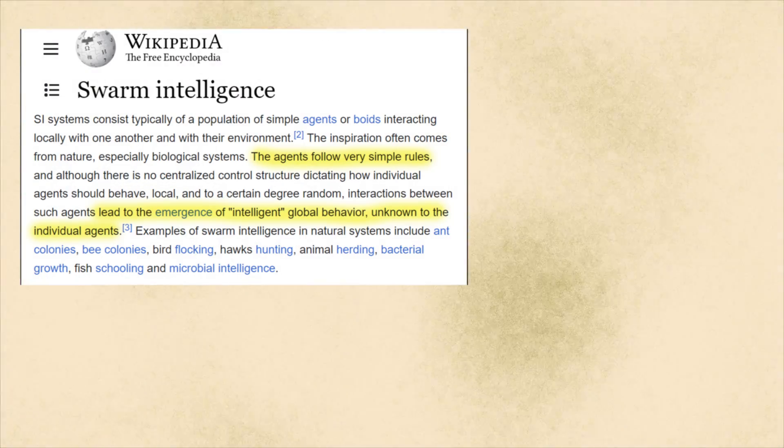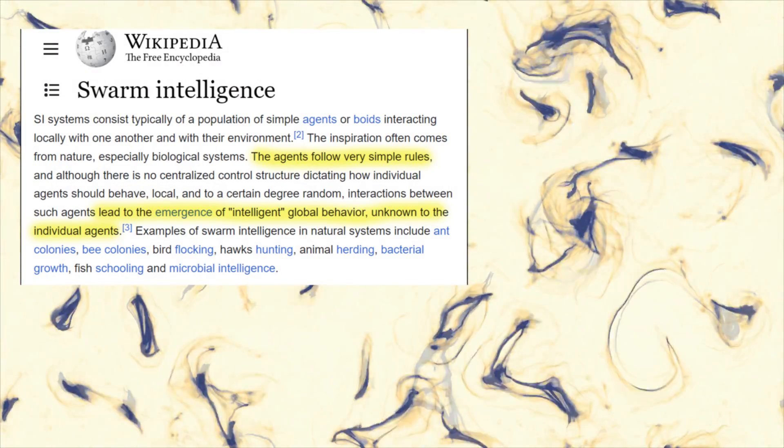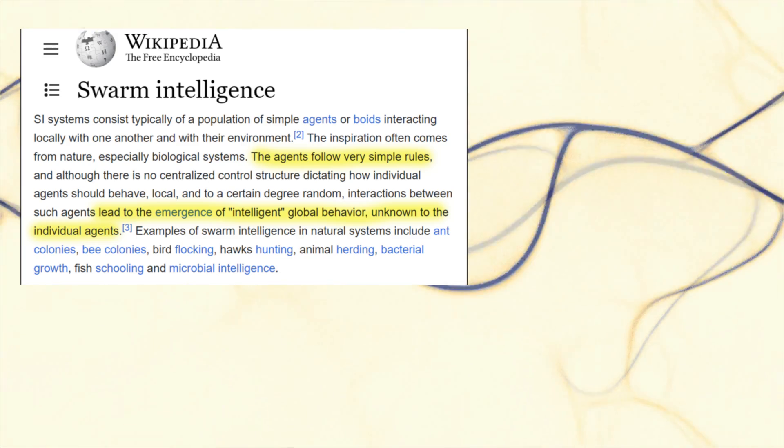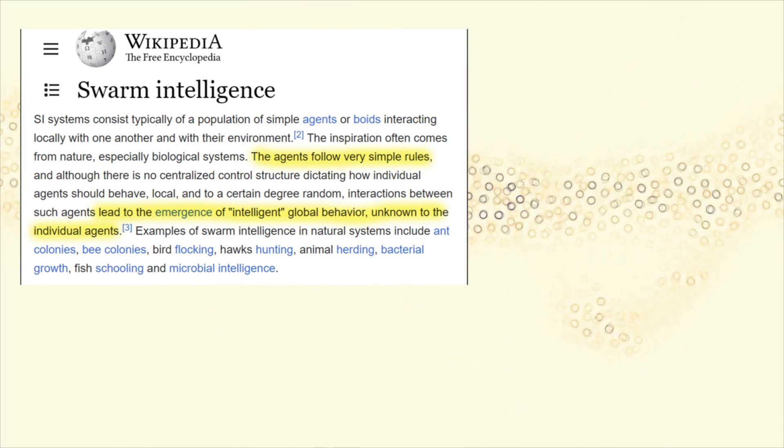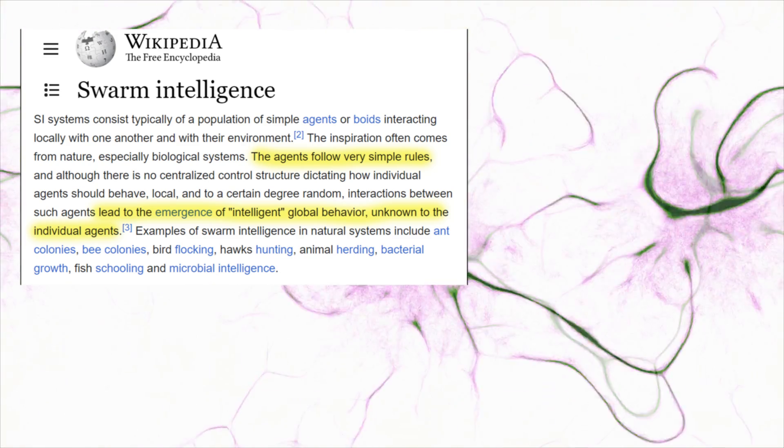Let's check out the Wikipedia article on swarm intelligence. The agents follow very simple rules. Interactions between the agents leading to the emergence of intelligent global behavior unknown to the individual agents.